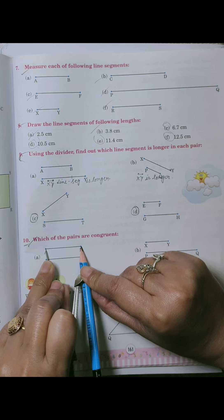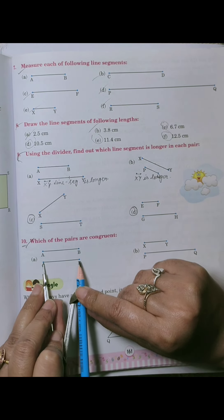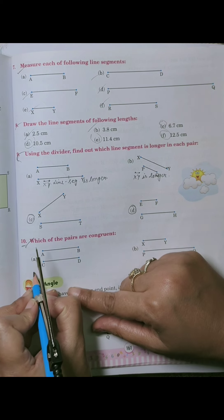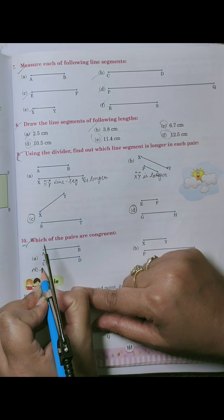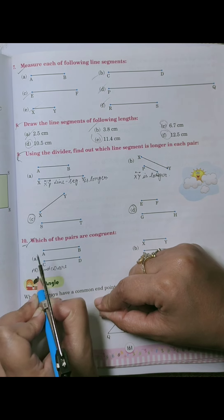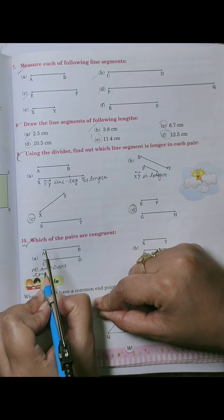So we will check how much CD is. Yes. So AB and CD are congruent. AB and CD are congruent.